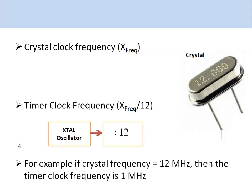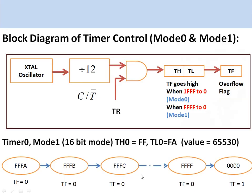If the crystal clock frequency is represented as X, then the timer clock frequency is X divided by 12. For example, if the crystal frequency is 12 MHz, then the timer clock frequency is 1 MHz.